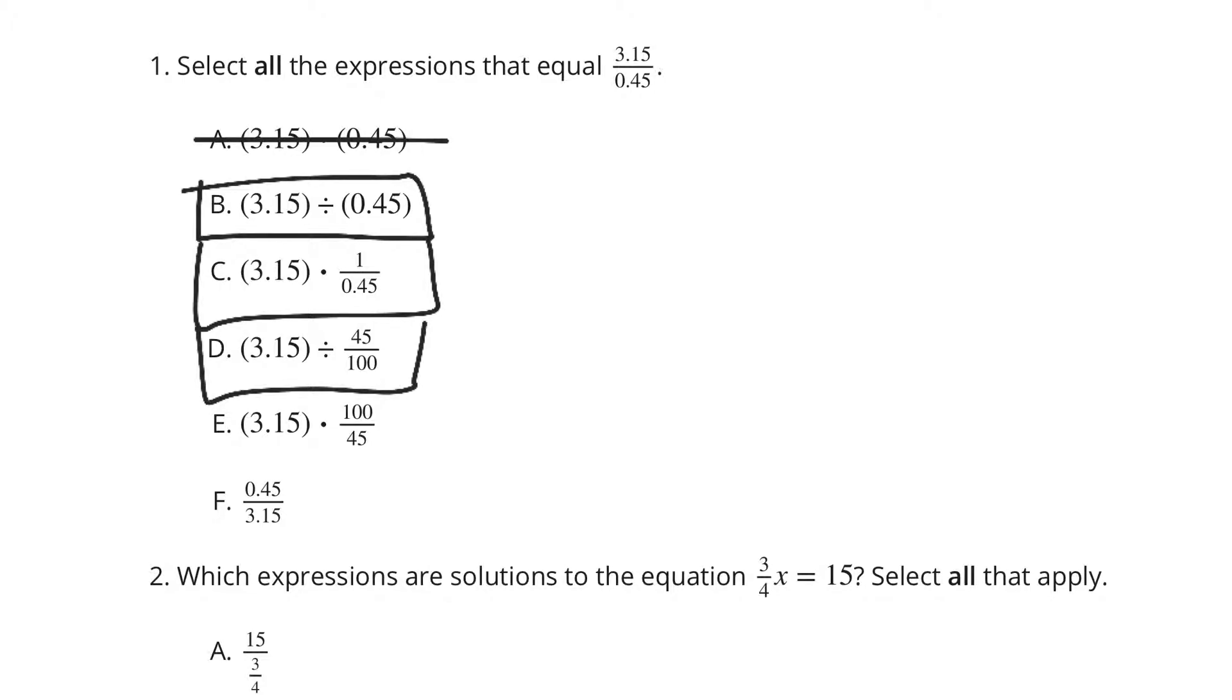Now, 3 and 1,500ths times 100 over 45, well, that's just taking D and multiplying by the reciprocal instead of dividing, so that works. But can we just flip it, 4,500ths divided by 3 and 1,500ths? No, that doesn't work. But B, C, D, and E do.